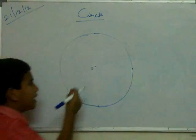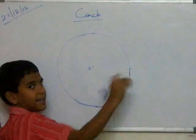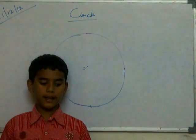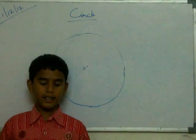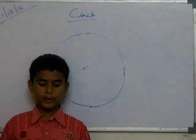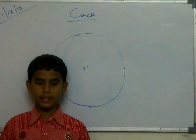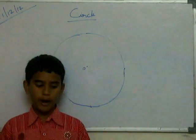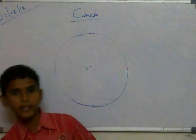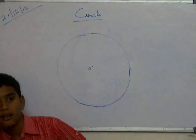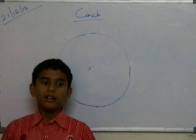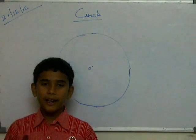First, radius. Radius of a circle is the distance from the center of the circle to any point on the circle. It is called radius.